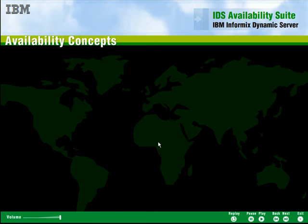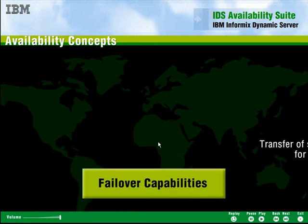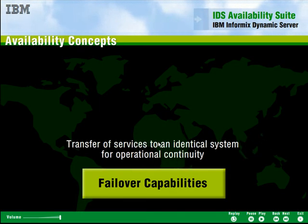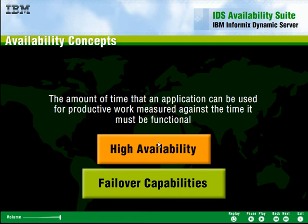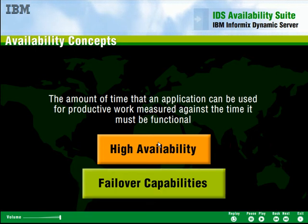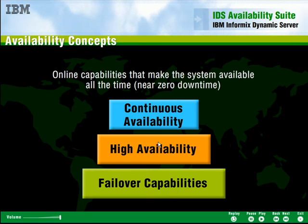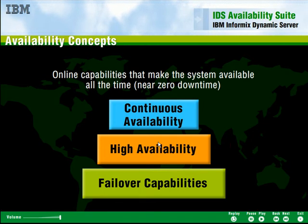Let's review the terminology. Failover is the transfer of services to an identical system for operational continuity. High availability is the amount of time that an application can be used for productive work, and is generally achieved using failover capabilities. Continuous availability includes the capabilities that make the entire system available with near zero downtime, and can be achieved using high availability solutions.